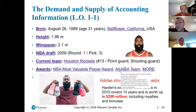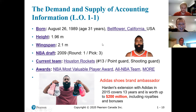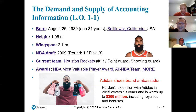Let's look at the demand and supply of accounting information. I'll start with an NBA basketball player — James Harden, a star. You can see a lot of his information: birth date, height, current team, awards received. He was the Adidas shoes brand ambassador. In 2015, he signed a 13-year contract for $200 million. So the question is: how do people know he's worthy of $200 million? Not because of his big beard — it's about his performance information.